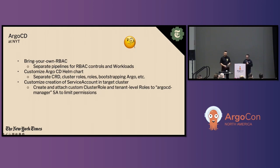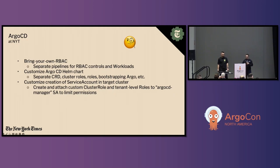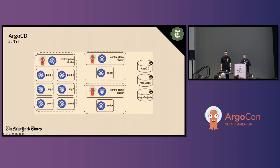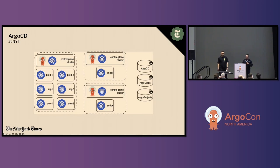We took the Argo CD Helm chart from the community — a fantastic place to start with lots of ways to customize your Argo deployment — and separated out all the cluster-based resources into separate deployment pipelines from the rest of Argo workloads. We also customized the service account that Argo CD uses to connect to different clusters. There are many architectural options with Argo CD: instance per cluster, standalone, management cluster, hub-and-spoke, instance per logical group, or split instances. Balancing the pros and cons, we went with one Argo to rule them all — the hub-and-spoke model — and we also have various smaller instances for our own testing.